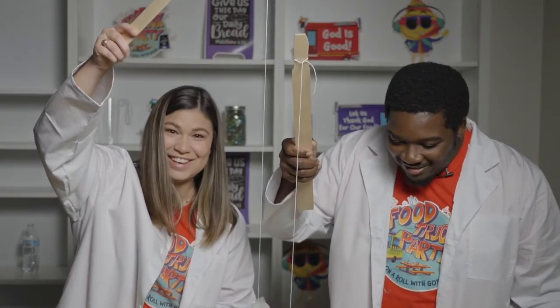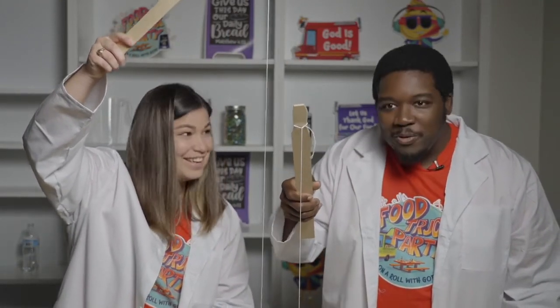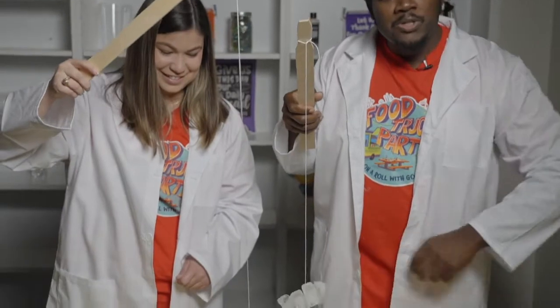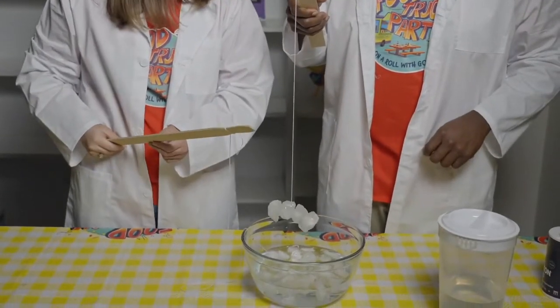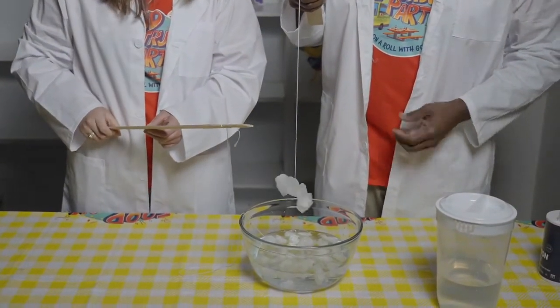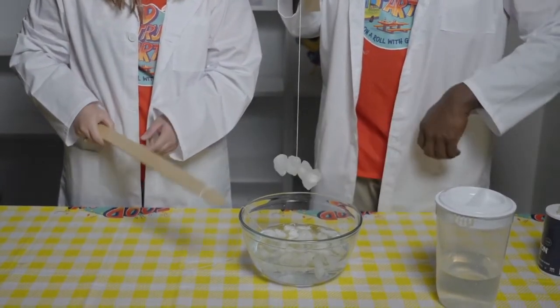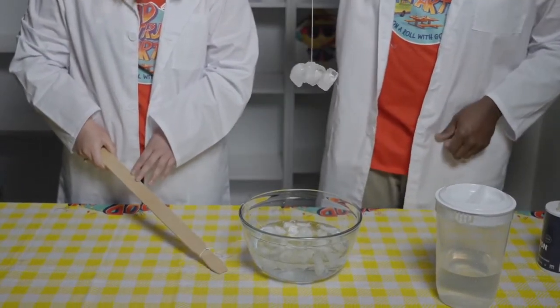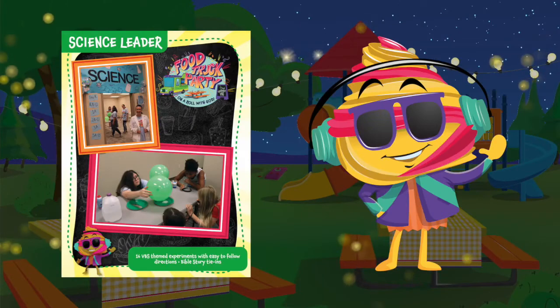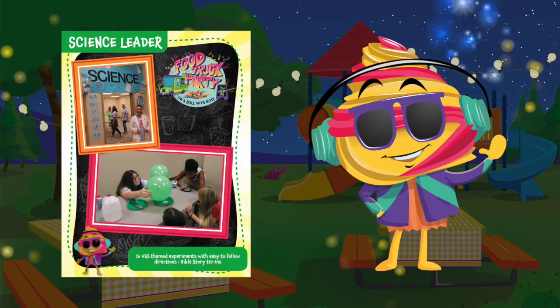But how that works mainly is just that the salt melts the ice a little bit because ice has that freezing temperature of about 32 degrees. So once it melts it, the string's right there on it, the ice freezes back up because it cools back off, and boom, you got fish!